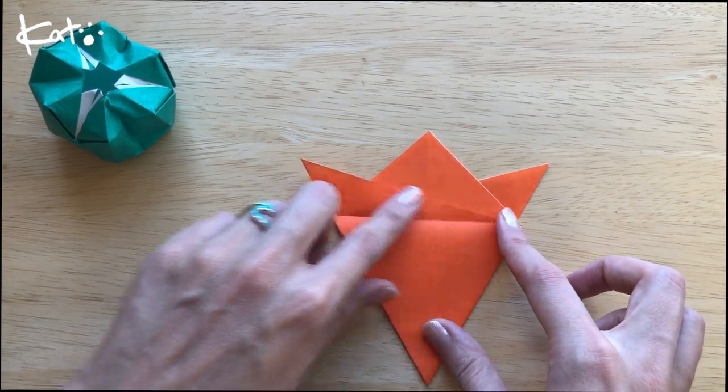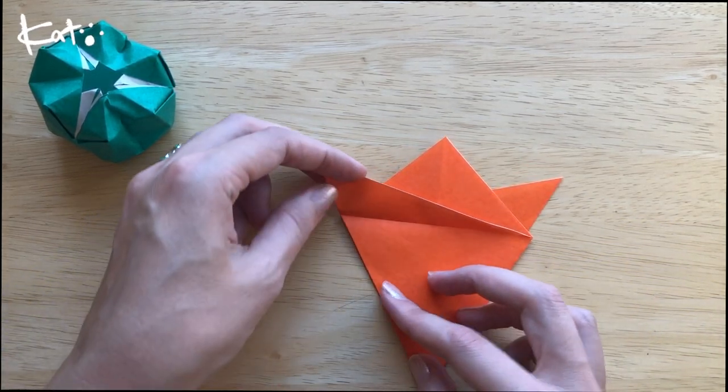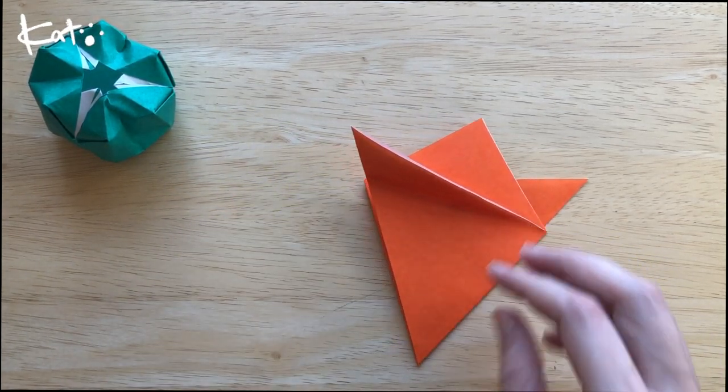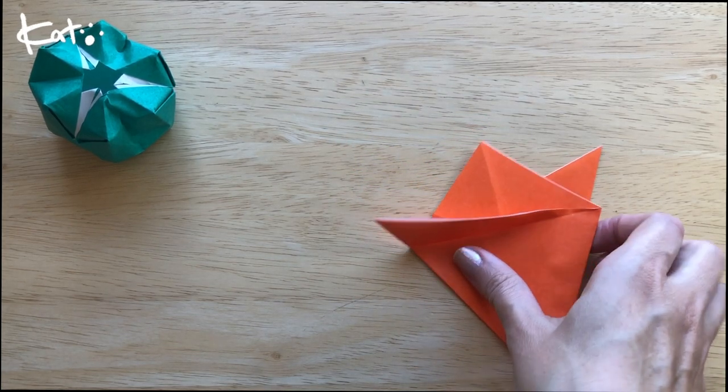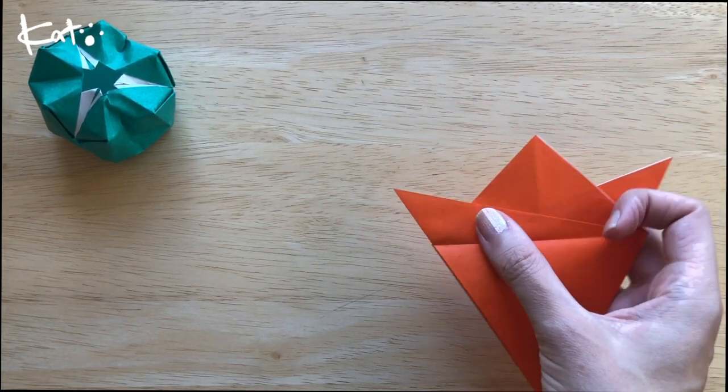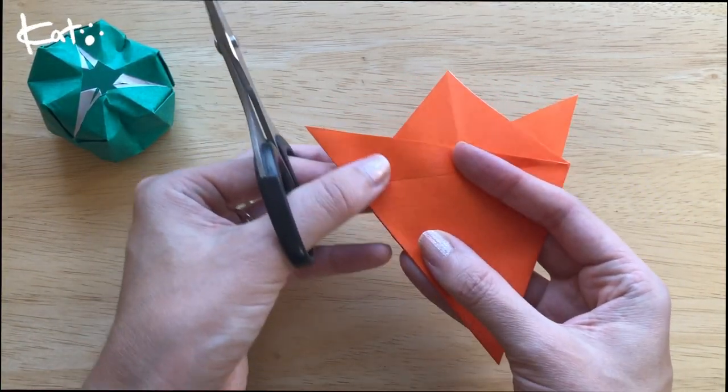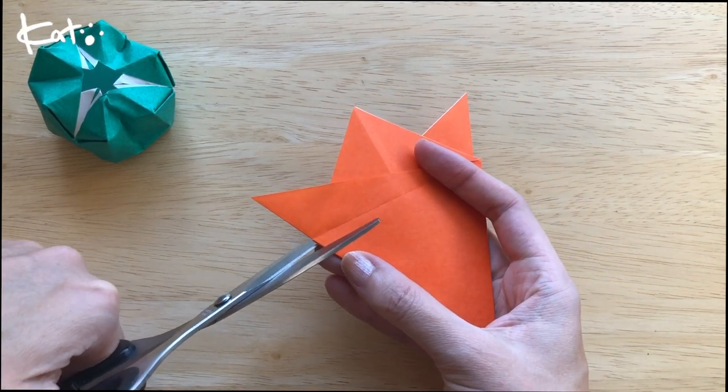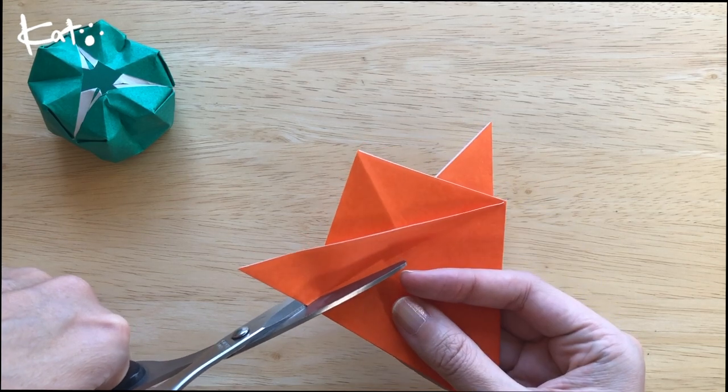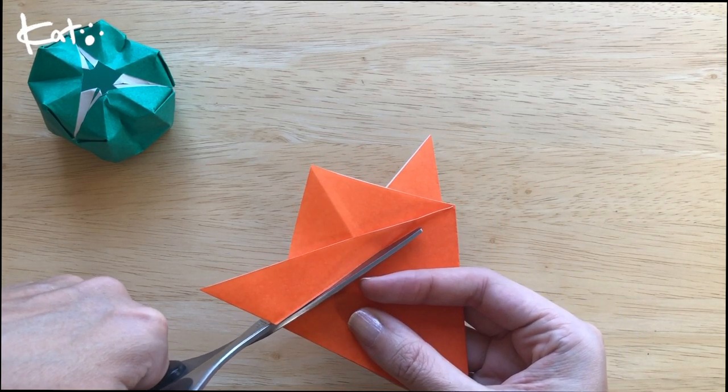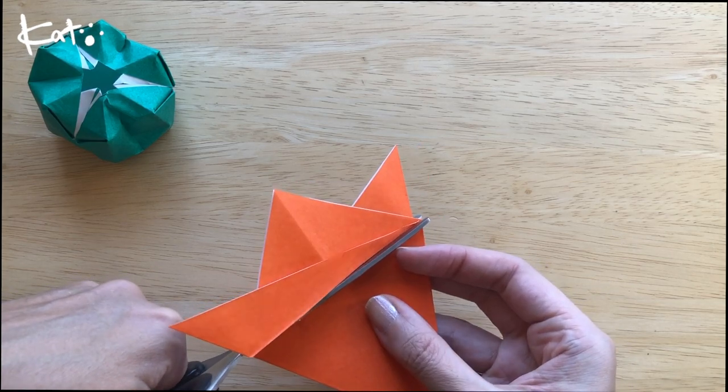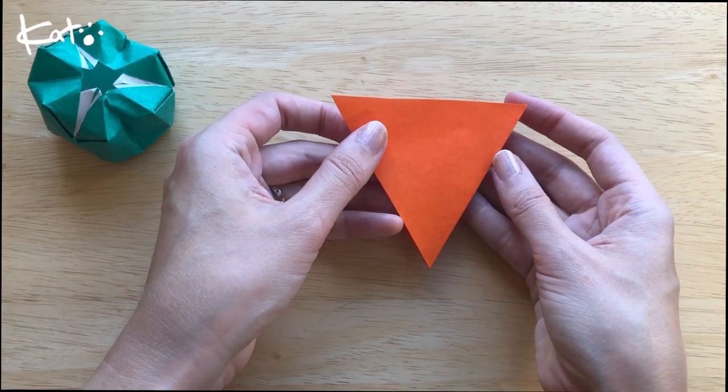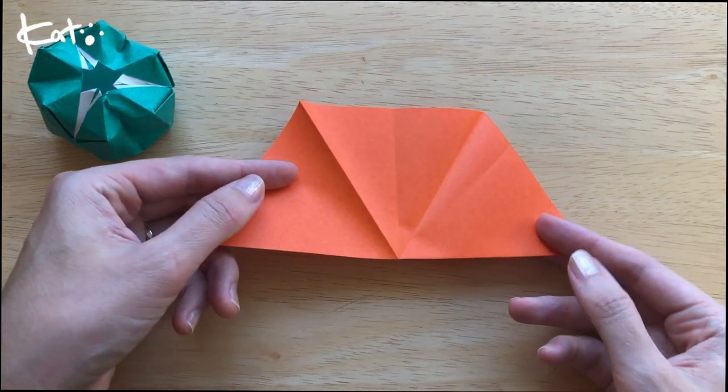Once we have that line we know where to cut. Get your scissors and cut all that excess off. Once you cut it, it should look like a perfect triangle which then folds out into a hexagon.